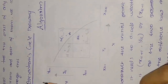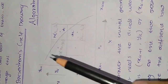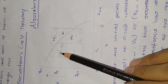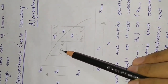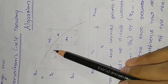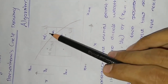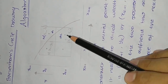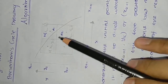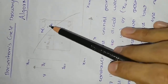This topic is Bresenham's Circle Drawing Algorithm. This is point P, and xk and yk are the initial point. This is the next point. This is the pixel algorithm for the Bresenham's Circle Drawing Algorithm.